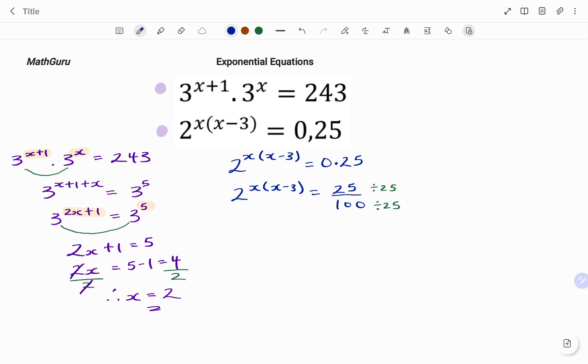So my equation becomes 2 to the power of x, bracket, x minus 3, equals 25 divided by 25. That's 1 for my numerator and my denominator. 100 divided by 25, that's 4.